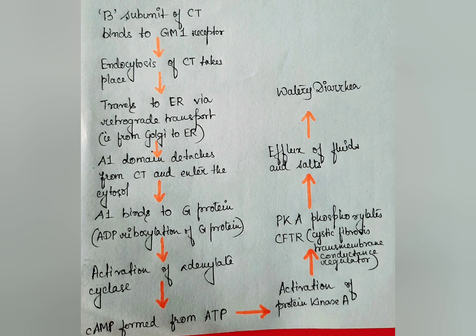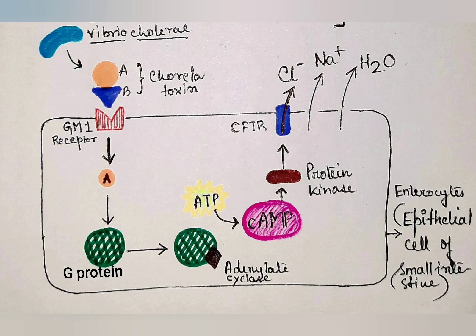This causes the efflux of fluids and salts from the body, manifested as watery diarrhea, leading to heavy loss of fluid and electrolyte imbalance. Protein kinase A causes the opening of ion channels, leading to secretion of chlorides and bicarbonate, ultimately causing severe dehydration and electrolyte imbalances.